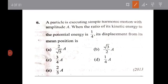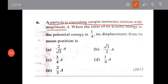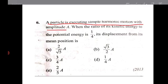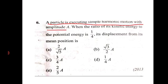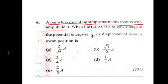This particle is executing simple harmonic motion with amplitude A. When the ratio of its kinetic energy to potential energy is 1 by 4, find the displacement from the mean position. This is a standard SHM question.